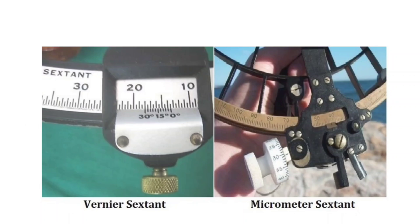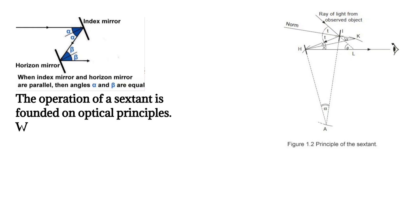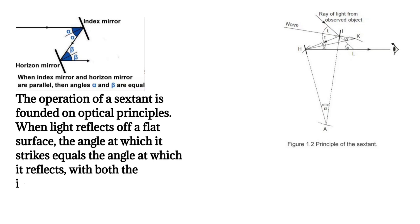Principle of sextant. The operation of a sextant is founded on optical principles. When light reflects off a flat surface, the angle at which it strikes equals the angle at which it reflects, with both the incoming and reflected rays lying in the same plane.